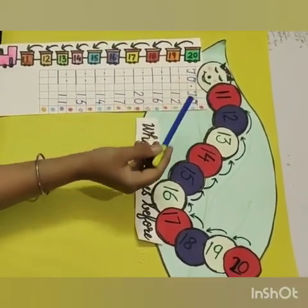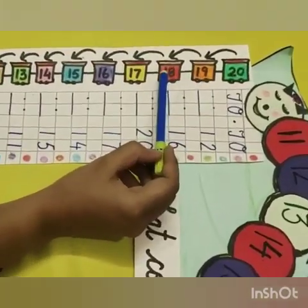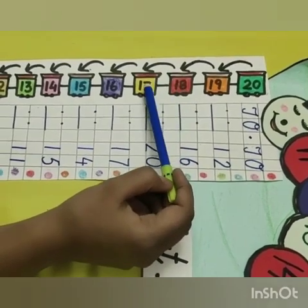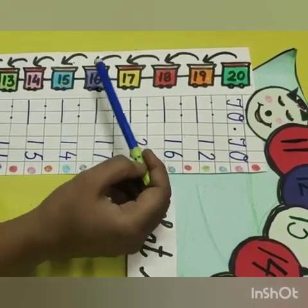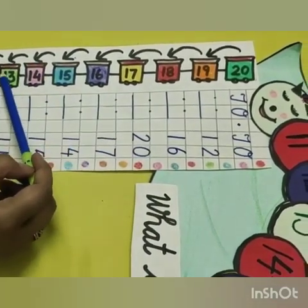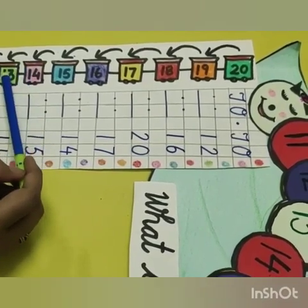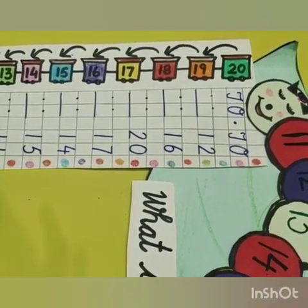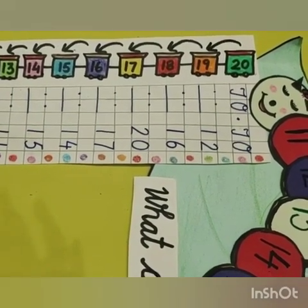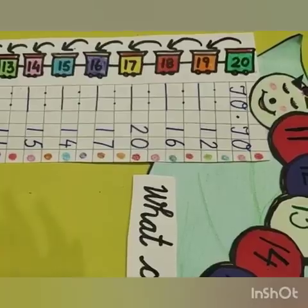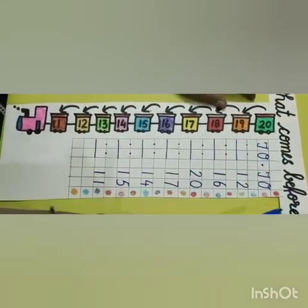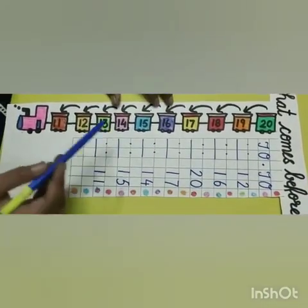Now speak with me. Dear children, have you learnt back counting from 20 to 11? Now let's do one exercise on what comes before again. Our number is 12.